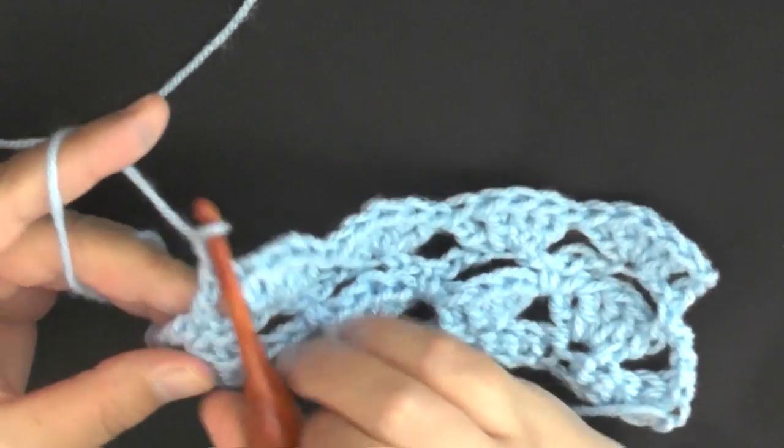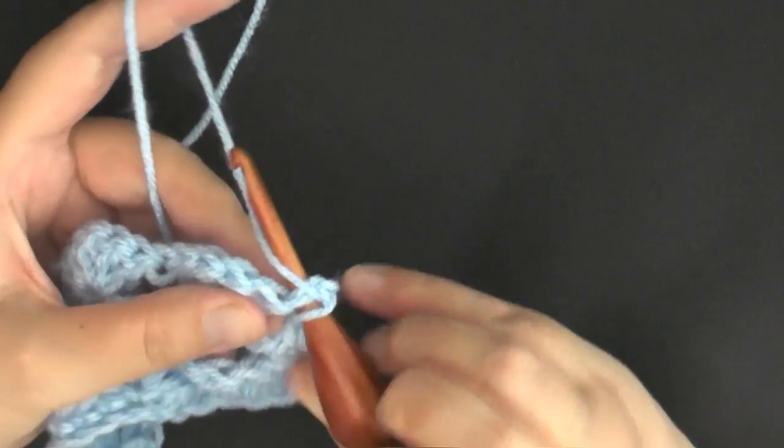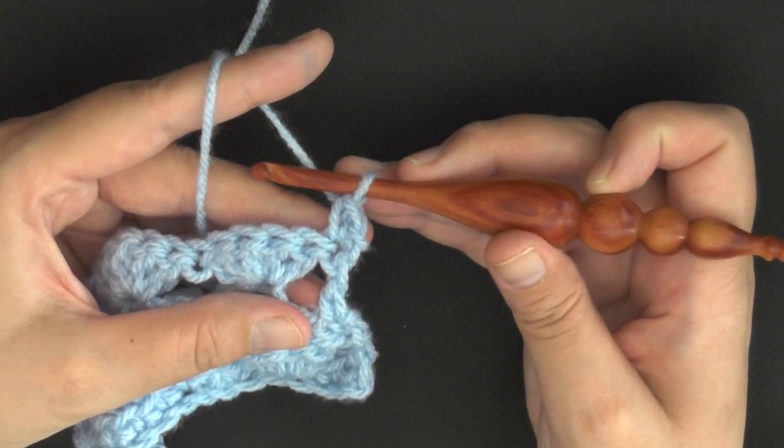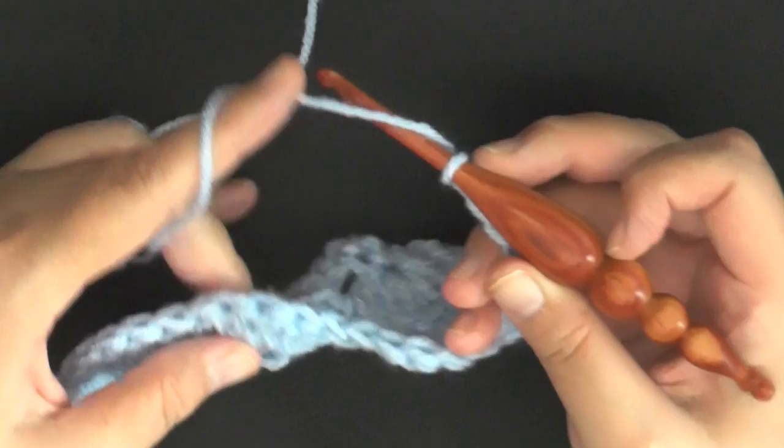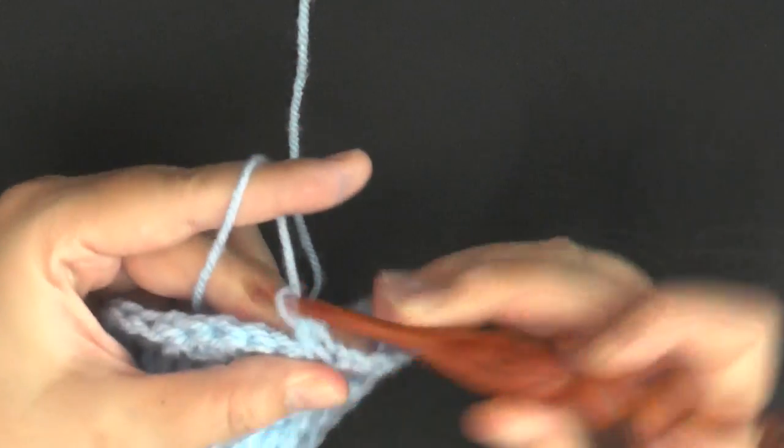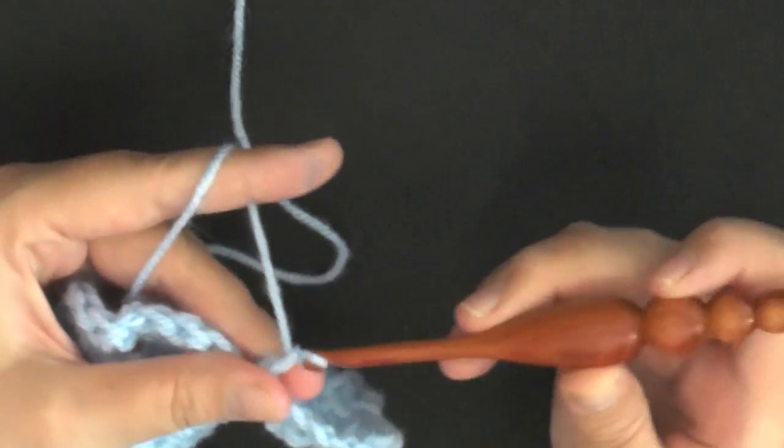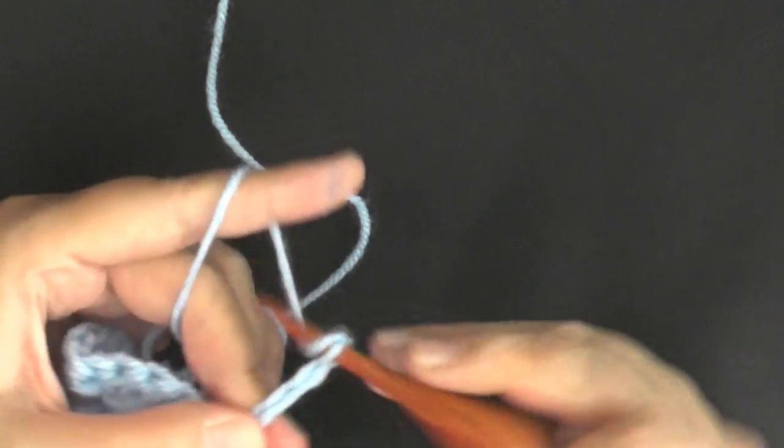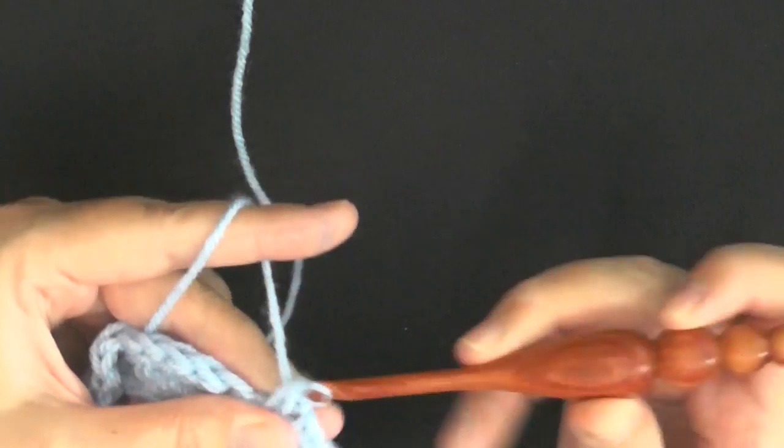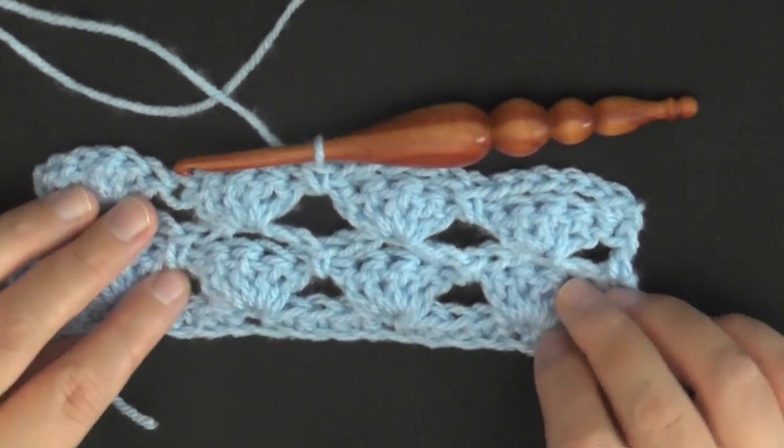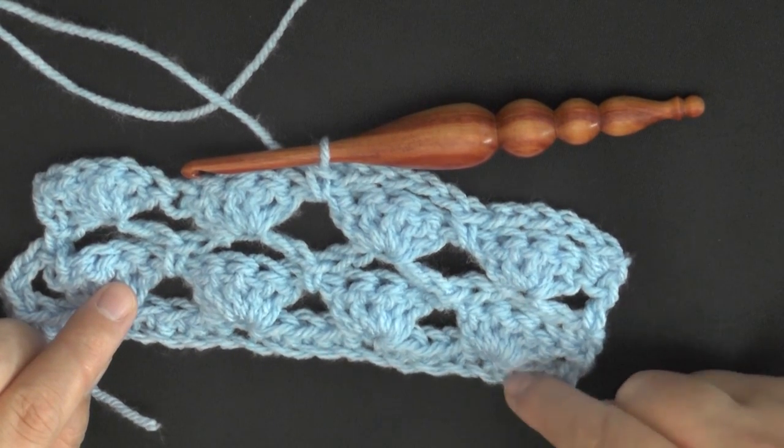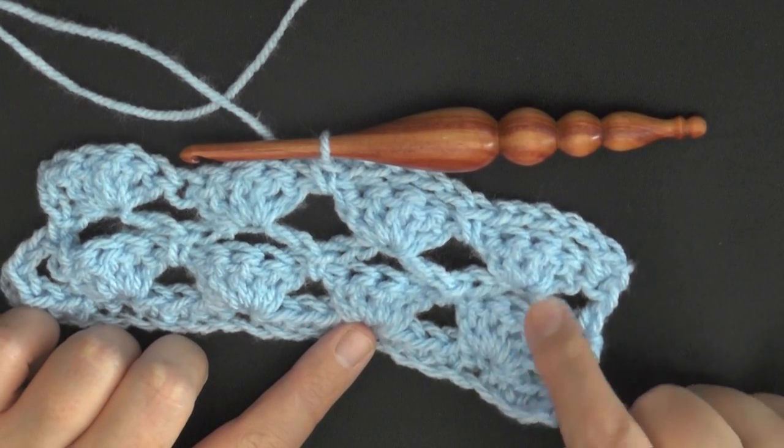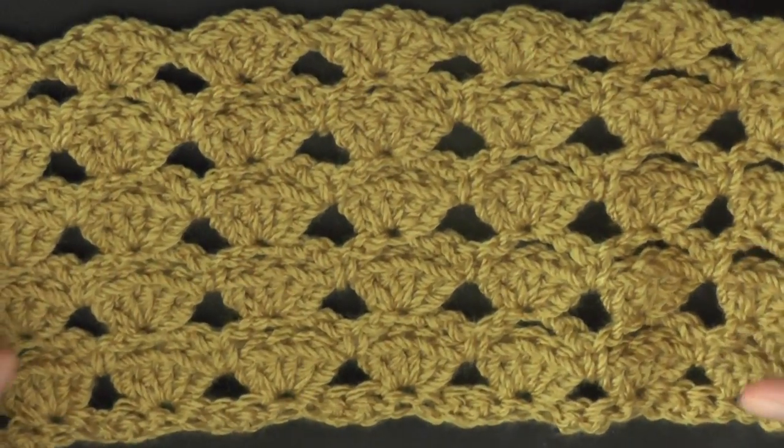So you'll chain one again and turn, and then again you're going to single crochet in that first single crochet. Then you'll chain five, and then again you'll be putting a single crochet worked in the middle of your shells, just like that. And it'll be the same thing over and over and over again. You just have to repeat the last two rows. So if you want to say this is one, so two and three, so you can repeat rows two and three over and over again until your project gets to be the length that you desire.